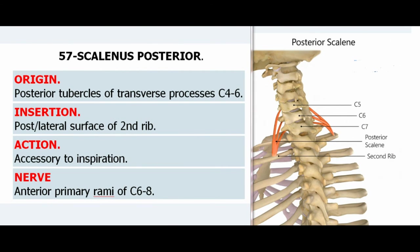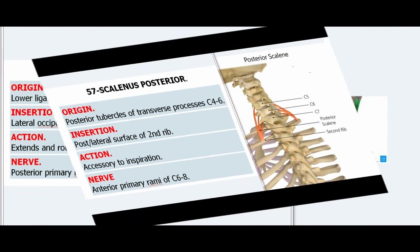57. Scalenus Posterior. Origin: Posterior tubercles of transverse processes C4–6. Insertion: Posterolateral surface of second rib. Action: Accessory to inspiration. Nerve: Anterior primary rami of C6–8.